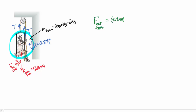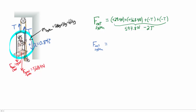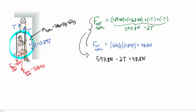Letting down be positive, the net external force on the system is: positive 29.4 newtons (gravity on chair) plus positive 568.4 newtons (gravity on man), plus two tension forces both pulling upward — negative T from the rope on the man's hand and negative T from the rope on the chair — giving 597.8 minus 2T. The net force also equals the total mass times acceleration: 61 kilograms times 0.8 meters per second squared, which is 48.8 newtons. So 597.8 minus 2T equals 48.8, giving 549 equals 2T, and the tension is 274.5 newtons, exactly as before.